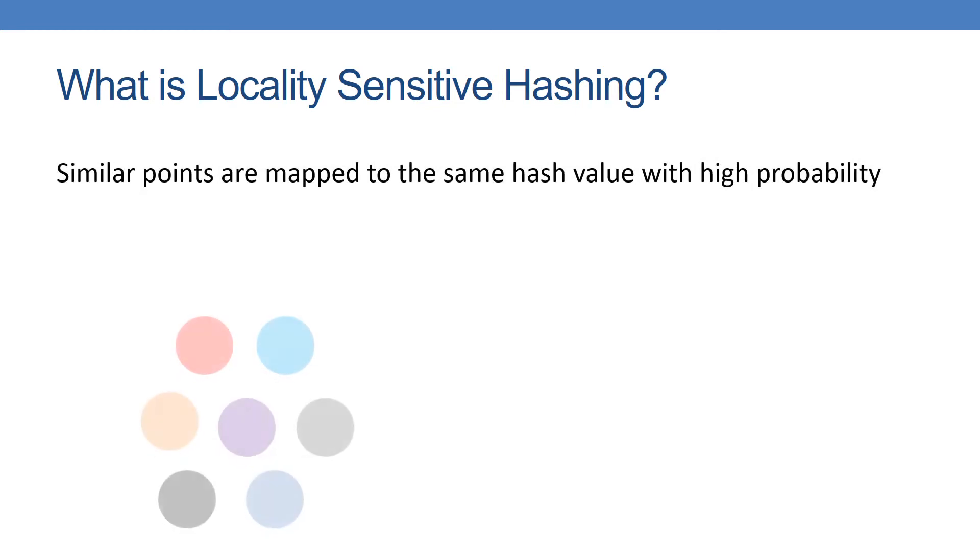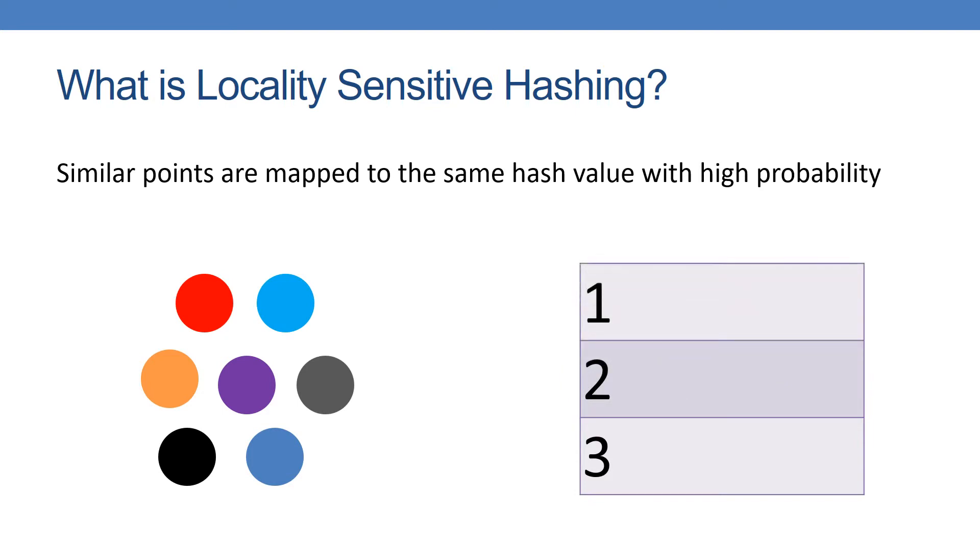Say we have a group of colored balls, and we would like to organize them into three buckets. An LSH function would map the balls into three distinct color groups.